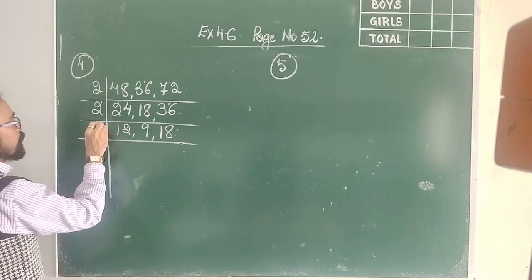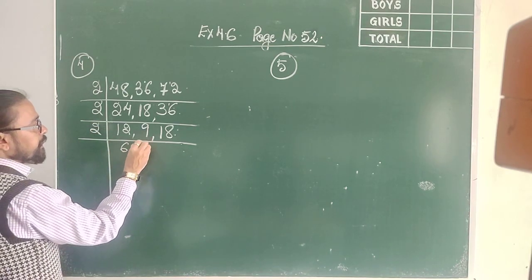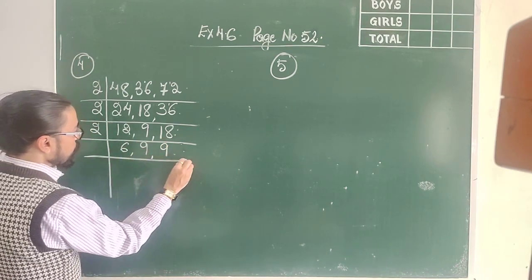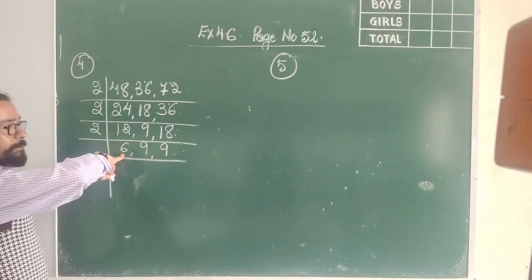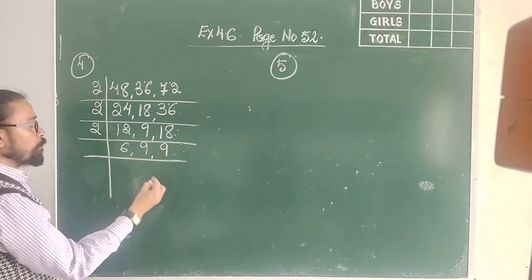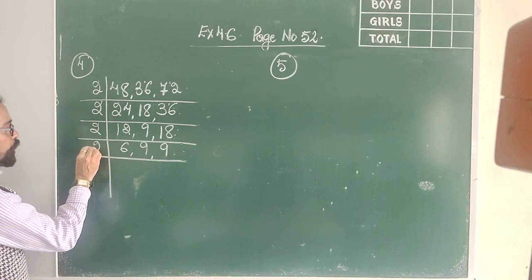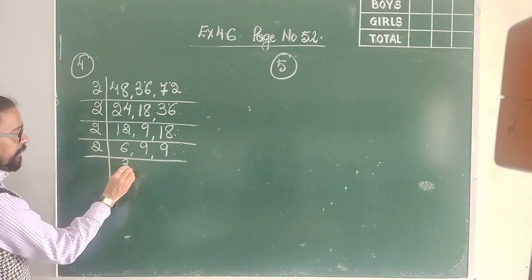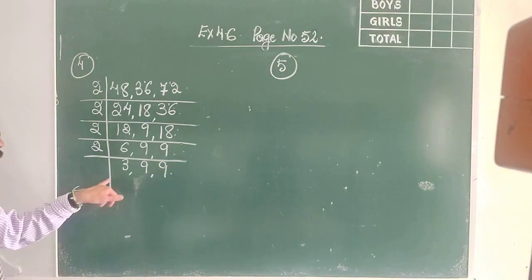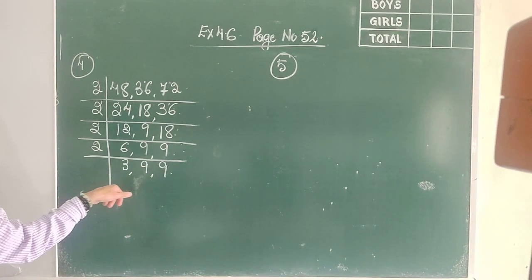So 9 will be copied down. 2 sixes are 12, 9 comes down. Now, as you can see, only 6 is divisible by 2, but not the two 9s. So both 9s will be copied down. 2 threes are 6, 9 comes down, 9 comes down. Now none of the 3 numbers are divisible by 2.